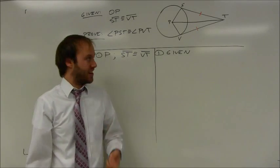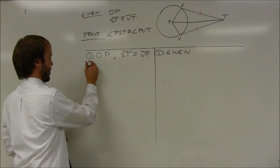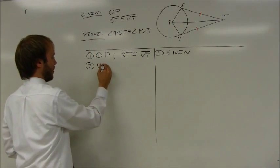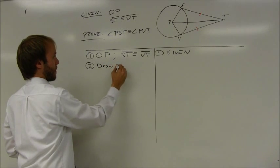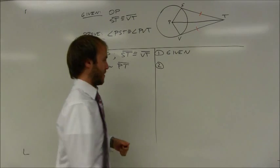If I'm going to add this auxiliary line into my proof, I do need to include that as a step of the proof. So step two says to draw segment PT. The reason being, two points determine a segment.